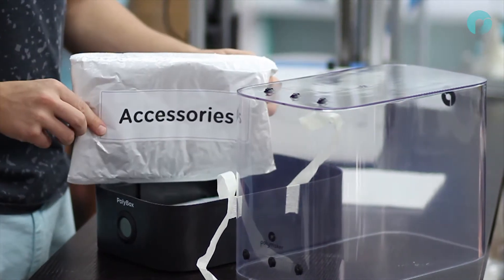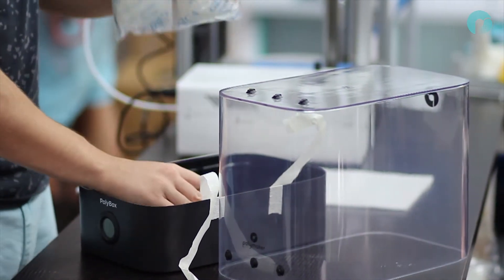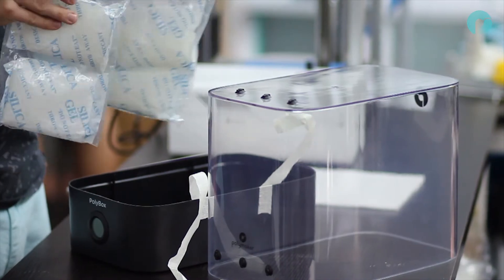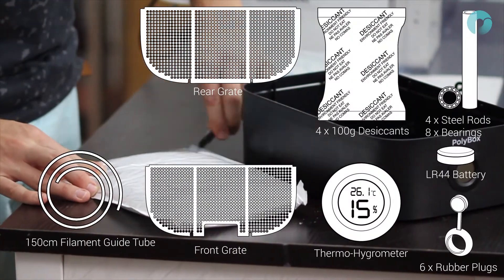The polybox comes with 400g desiccant bags, 2 grate covers, 6 rubber plugs, 4 steel rods, and 8 bearings.